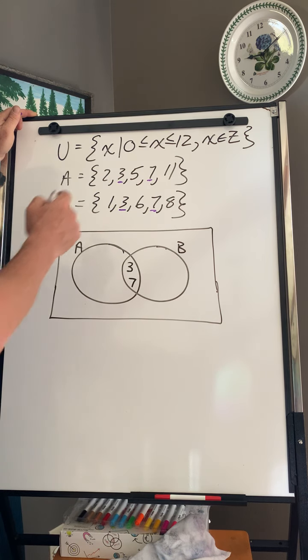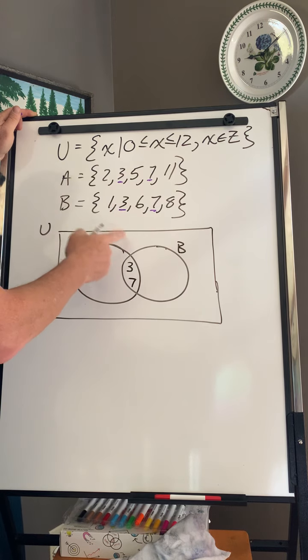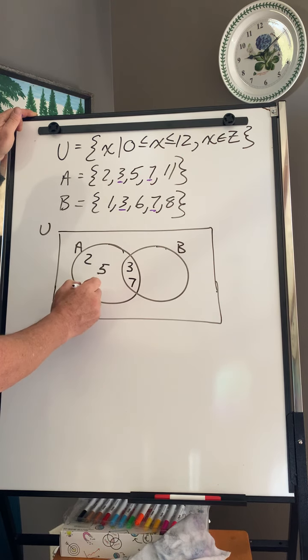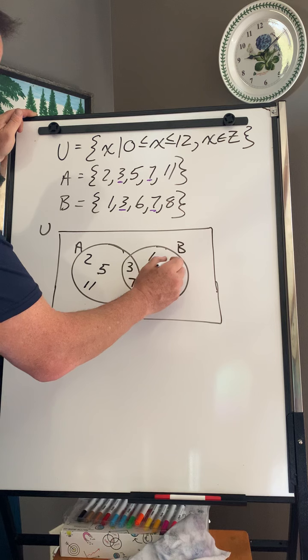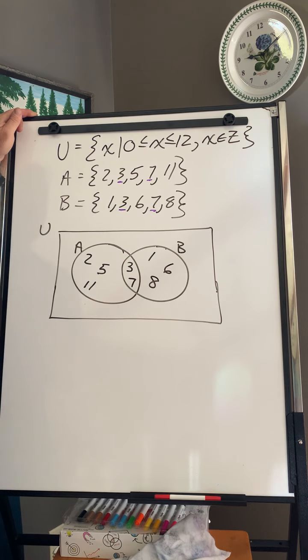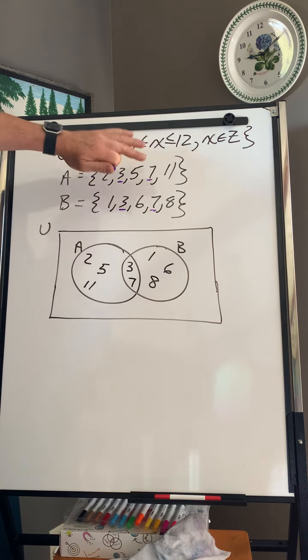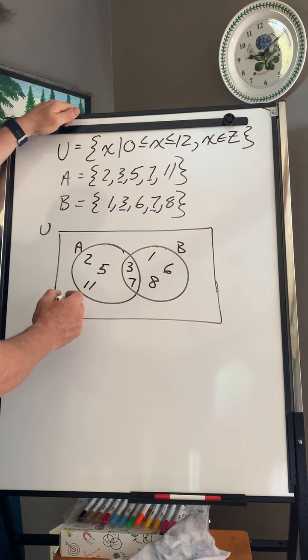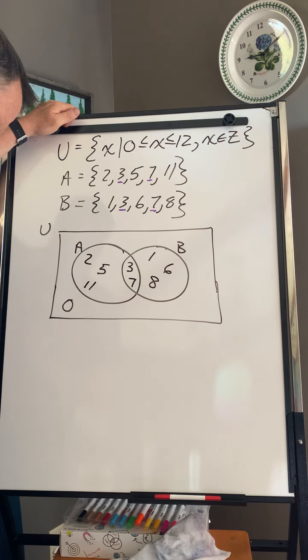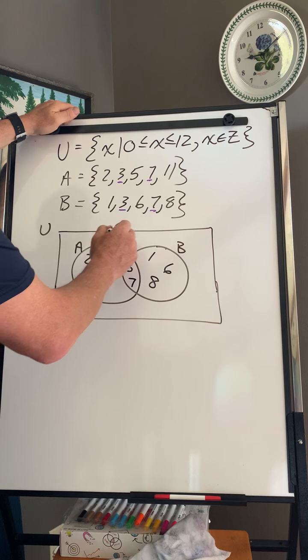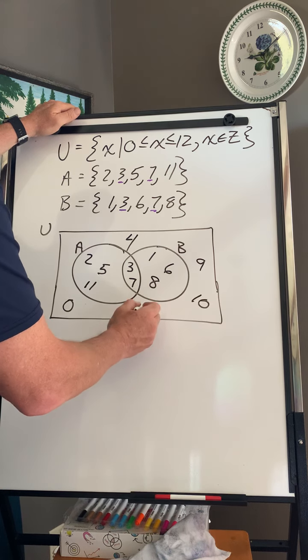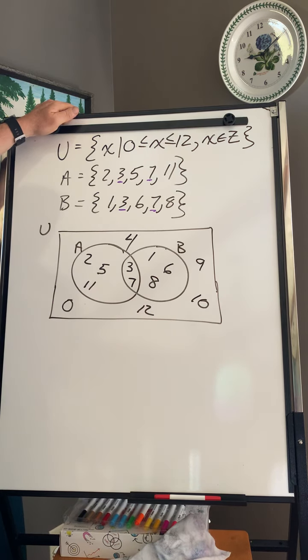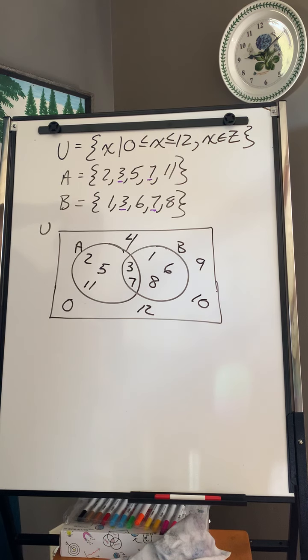Okay. And then everything that I didn't underline in A goes in the A circle. So I get 2, 5, and 11. Here, same: 1, 6, 8. But because I have the universal set, I also have to write the numbers that aren't in either A or B. So I've got 0, 4, 9, 10, 12. So that's a basic Venn diagram with two sets inside the universal set.